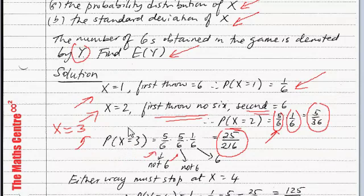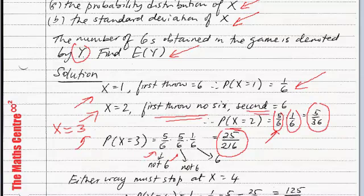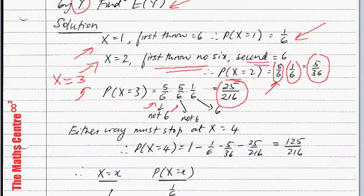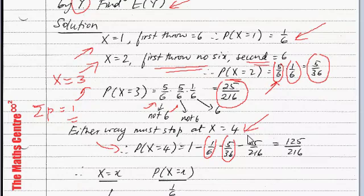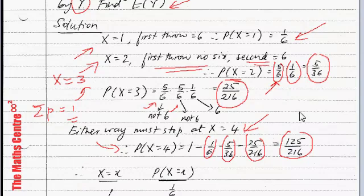For the fourth throw, we don't really care because either way the game is over after the fourth throw. For a probability distribution, the sum of the probabilities must equal one. So to find the probability of X equals to four, I take one minus one over six, minus five over thirty-six, minus twenty-five over two-sixteen. This is sort of dealing with complements — one minus the rest gives the probability of X equals to four, which is 125 over 216.